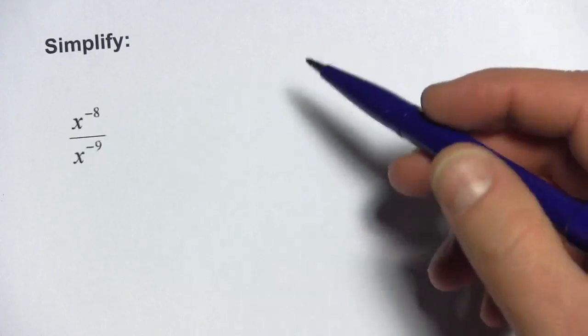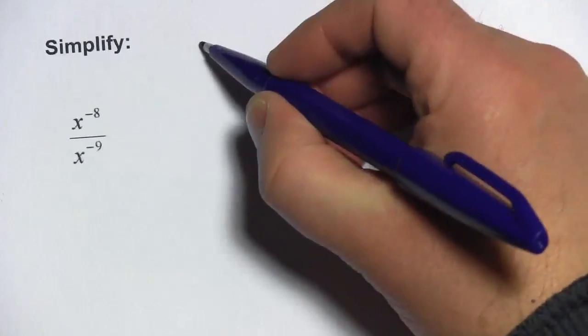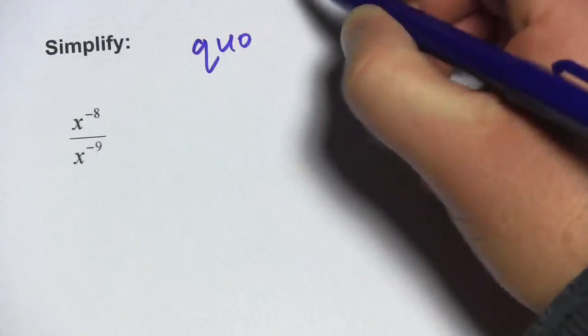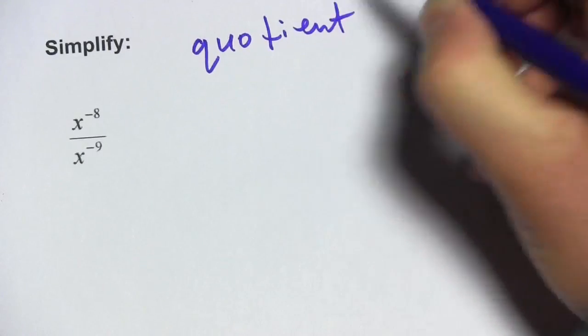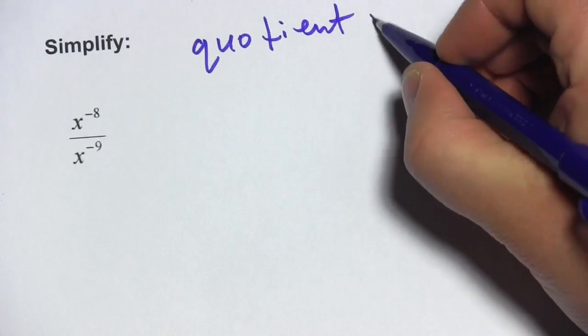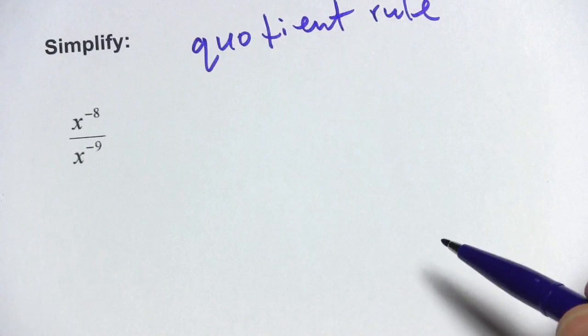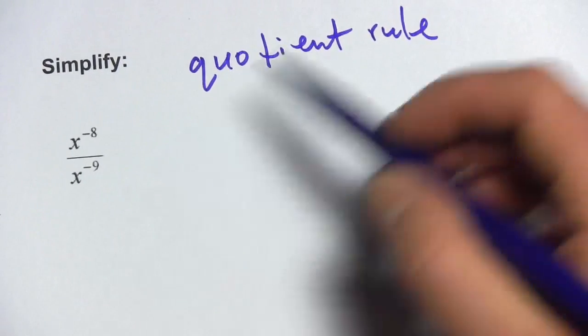In these problems, we're using something called the quotient rule of exponents and that's a pretty fancy name for something that is not really too hard. All you really have to do with the quotient rule is subtract. So let me show you how this works.